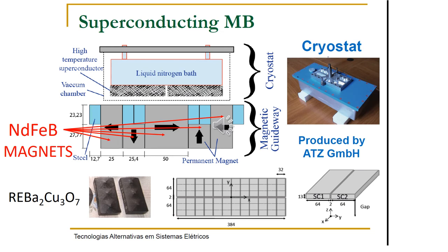Here, we see the levitating system. The Halbach rail includes neodymium iron-boron magnets and magnetic steel pieces to optimize the field and field gradient. The cryostats, made by the German company ATZ, contains liquid nitrogen and bulk rare earth barium copper superconductors. The slide shows the arrangement of the superconductors in the cryostats.